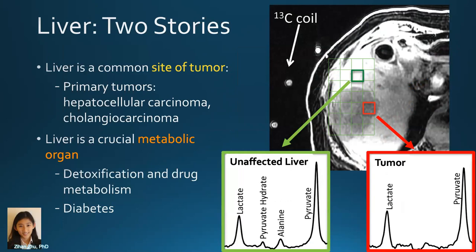So we're going to talk about two stories. At UCSF, in terms of published data, we probably have more experience in the liver than a lot of other sites. A lot of what I'm going to show is the work of Dr. Zhu, who worked with Dan Vigneron. This is an example of a tumor — an endometrial carcinoma metastatic to the liver. You can see it has a good bit of lactate and pyruvate, but not a lot of alanine. Then we're going to talk about what the rest of the liver does — one distinguishing characteristic of normal liver is it has a good bit of alanine.